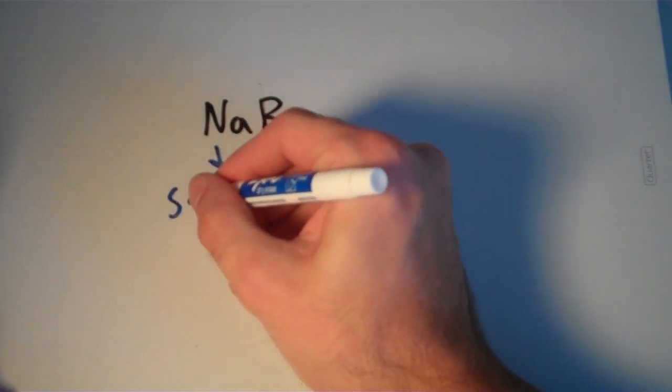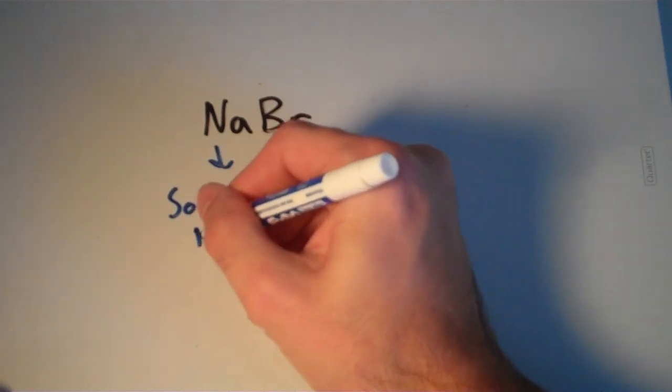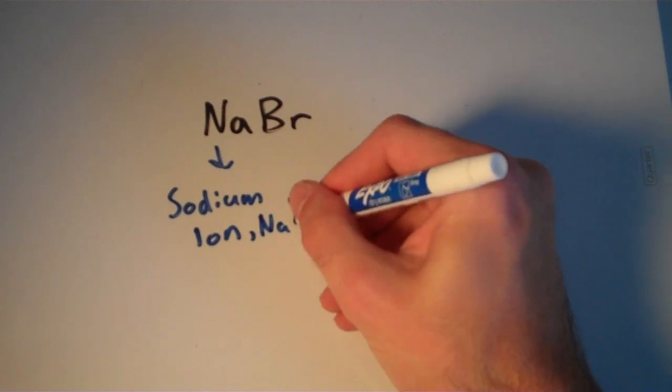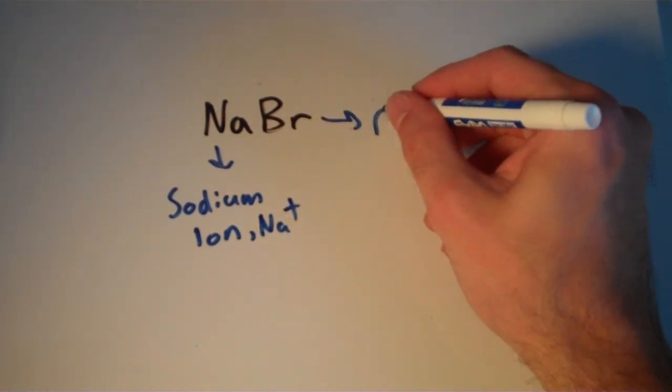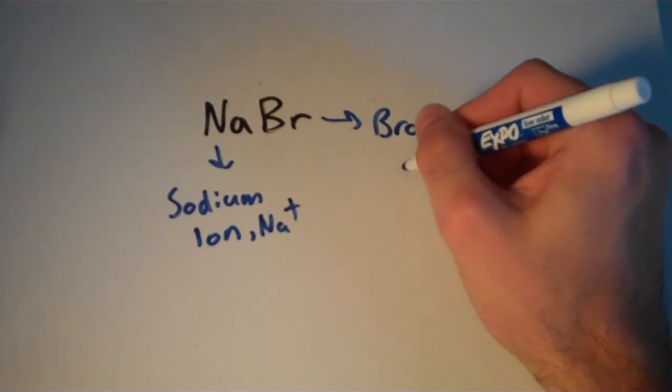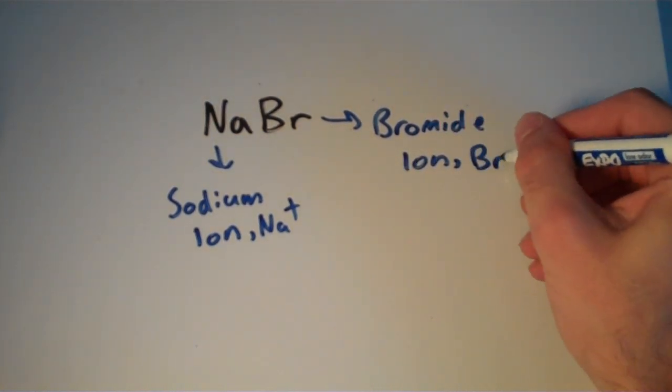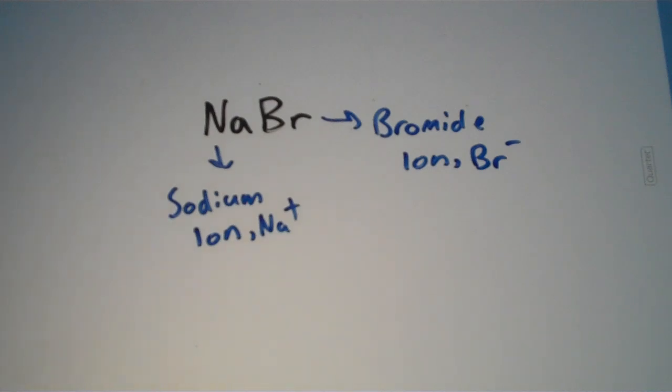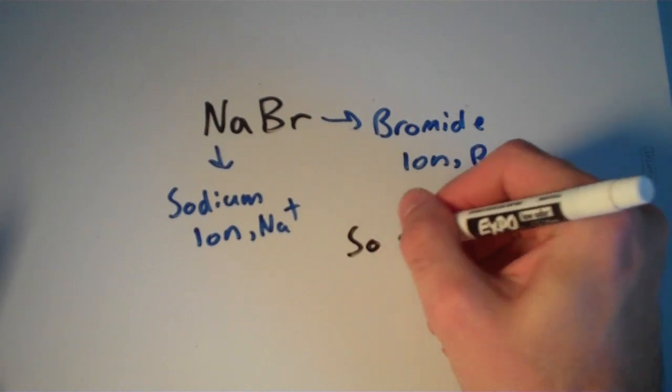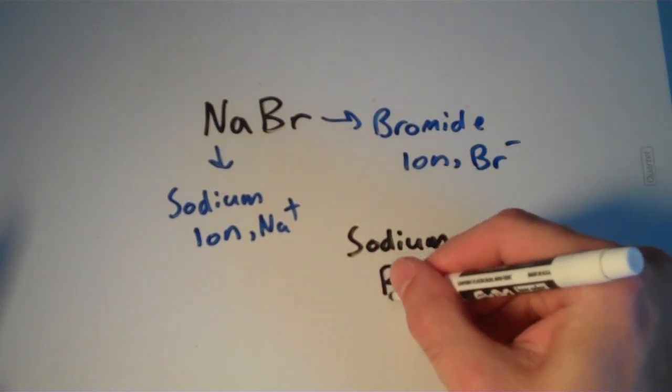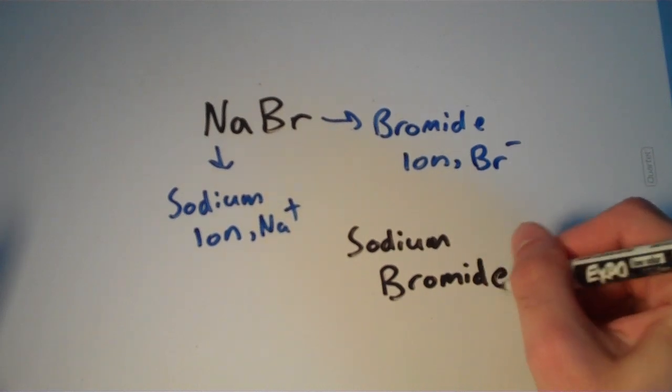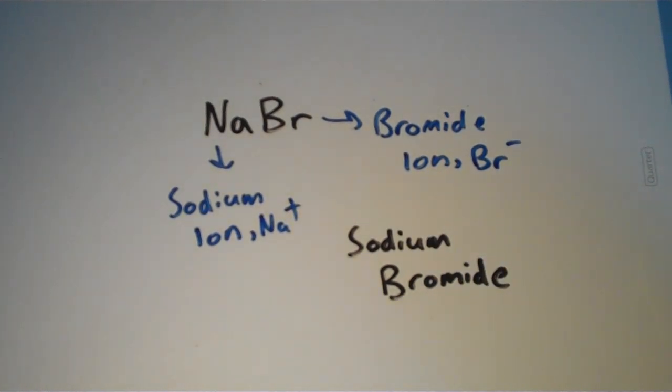NaBr. What is this stuff? What's the name? Our cation is the sodium ion, Na+. And then our anion is the bromide ion, which is Br-. So the name of this compound is sodium bromide.